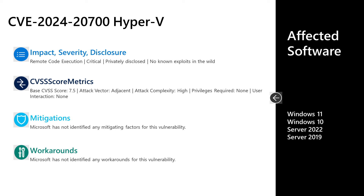Next, CVE-2024-20700. This is a critical remote code execution vulnerability in Hyper-V, privately disclosed with no known exploits out in the wild. It has a base score of 7.5. The attack vector is adjacent, the attack complexity is high, no privileges are required, and no user interaction is required to leverage this vulnerability. There are no known mitigations or workarounds. Affected software includes Server 2019 and 2016, as well as Windows 10 and Windows 11.